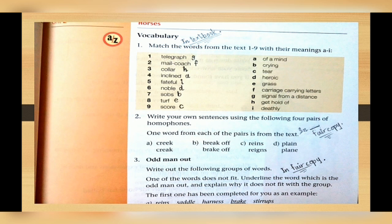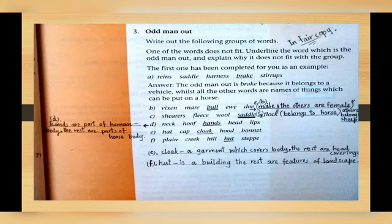Number third is odd man out exercise. In this exercise, what we have to do is write out the following group of words. One of the words does not fit. Underline the word which is odd man out and explain why it does not fit with the group. For example, there are written five or six words in each group, and in those five words there is one word which is different as compared to other words. So we will nominate and we will underline that word which is different, and then we will explain the reason why it is different.